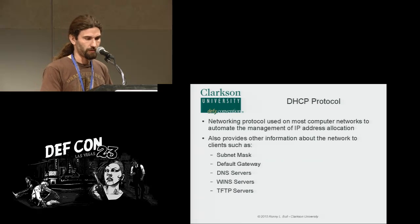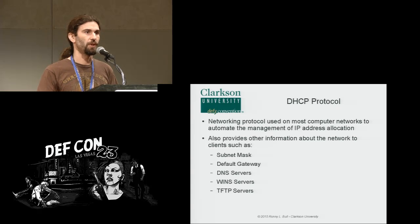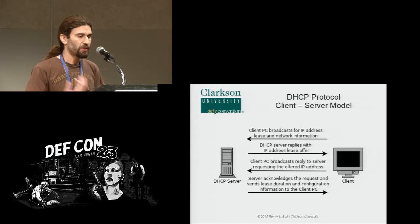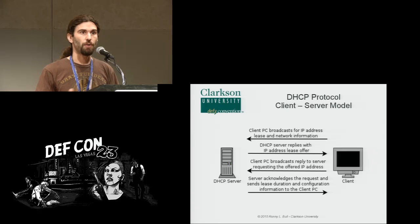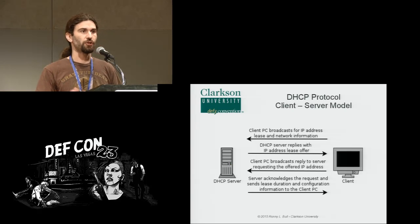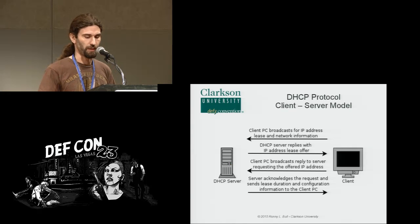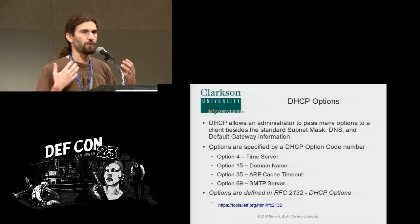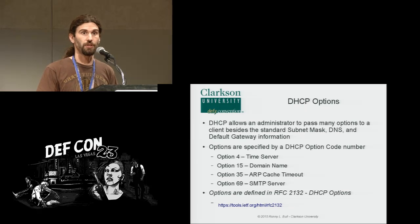Now let's discuss DHCP attacks. The basic DHCP protocol allocates network information — IP address, subnet mask, default gateway, and all the essentials needed to be on a network. It's a client-server protocol: the client broadcasts for an address, the server responds with a lease offer, the client broadcasts back accepting it, and the server acknowledges, establishing the lease. DHCP allows for options — RFC 2132 defines about 255 different options available to pass through DHCP, such as time server, domain names, and ARP cache.